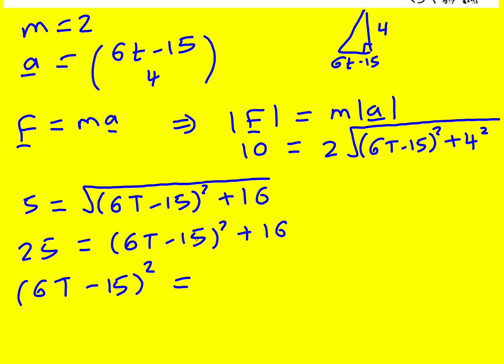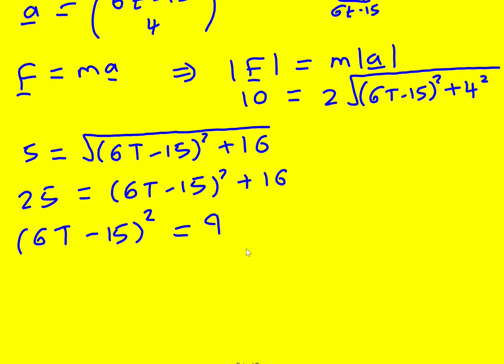So this is going to equal 25 minus 16 which is 9. Now you could expand this out and solve a quadratic but it's actually already in a great form. It's in completed square form essentially if we minus the 9 from both sides. So I can actually now take the square root of both sides.